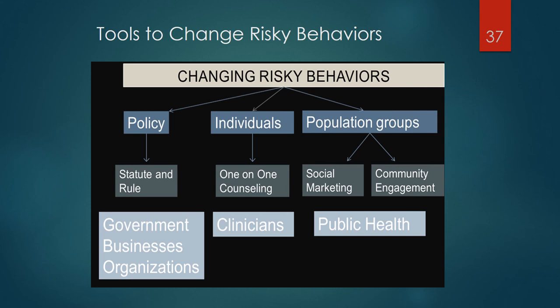There are three major sets of tools to change risky behaviors: policy influencing at the individual level, clinical or one-on-one interventions, and population-based interventions. Policy is developed by local, state, and federal governments, businesses, and organizations, and is an effective tool to encourage healthy behaviors but must be implemented and enforced to be effective. Clinicians are trained in one-on-one counseling, another powerful strategy. Population-based interventions include social marketing and community engagement, and population-based expertise lies in the discipline of public health. We need to use all these tools in a coordinated way to change risky behaviors in our populations.